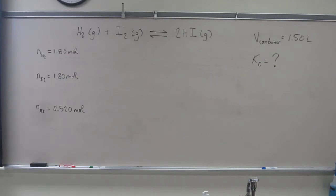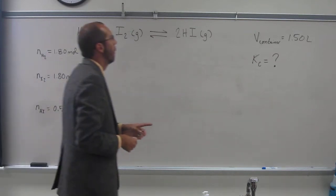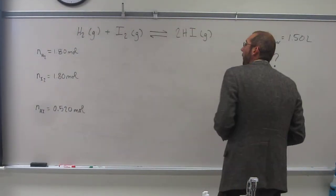if the amounts of hydrogen gas are 1.80 moles, iodine gas is 1.80 moles, and hydrogen iodide gas is 0.520 moles, and they're all contained in a 1.50 liter container.